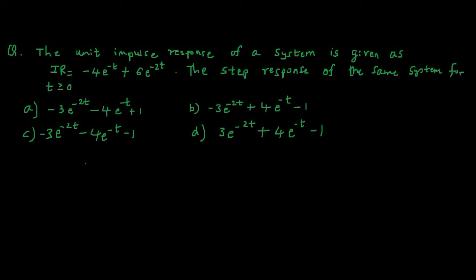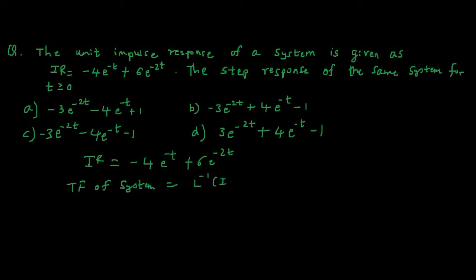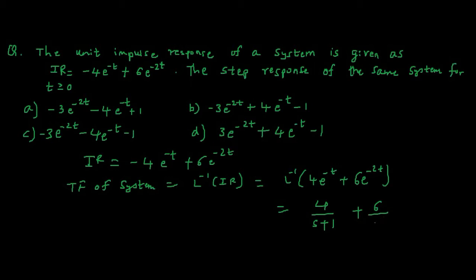So, what we have is the impulse response h(t) = minus 4 e raised to minus t plus 6 times e raised to minus 2t. We know that the transfer function of a system is the Laplace transform of the impulse response. So this equals minus 4 upon s plus 1 plus 6 upon s plus 2.